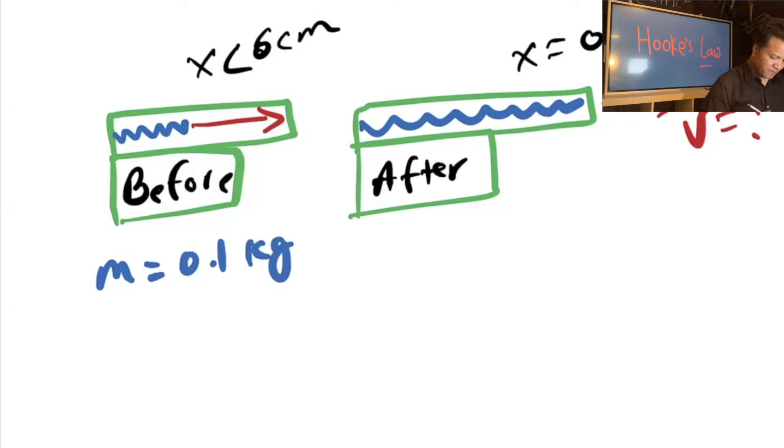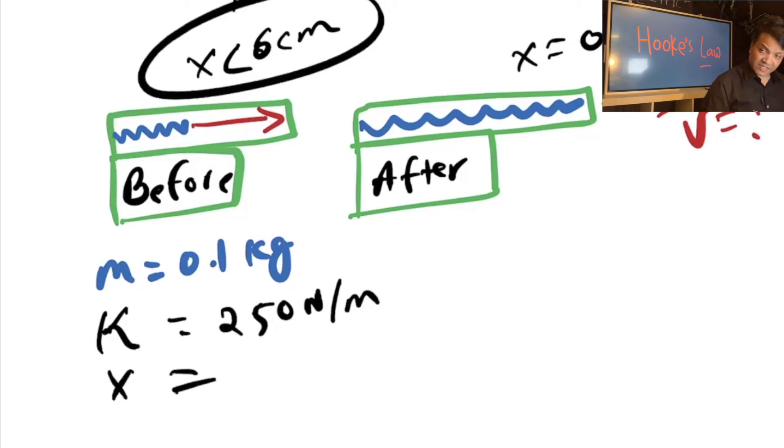What else is given? The Hooke's constant is given, which is 250 newtons per meter. That is the steepness of the spring. And what else is given? The x is given - x is 6 centimeters, 0.06 meters.